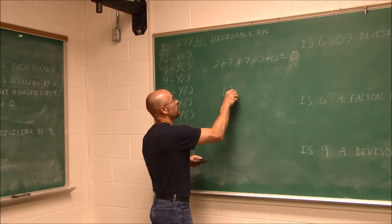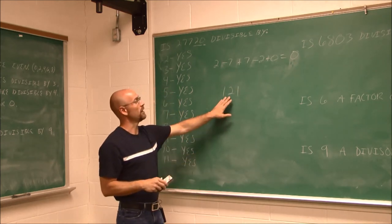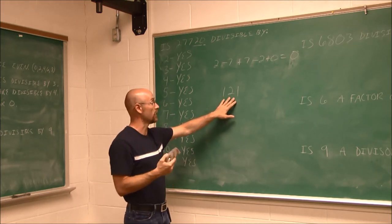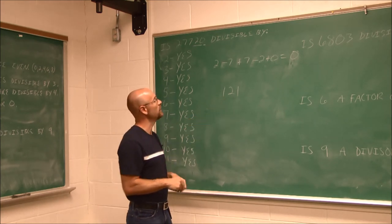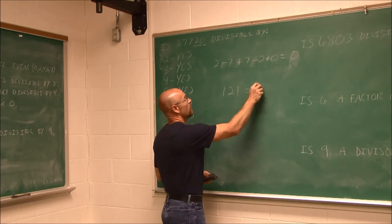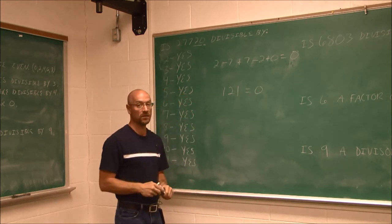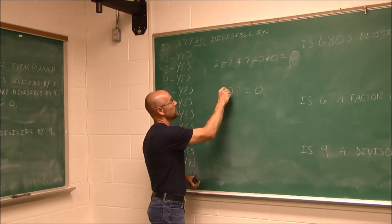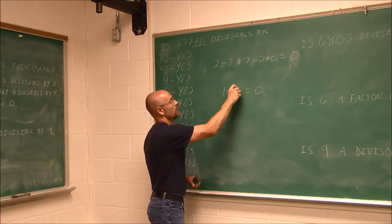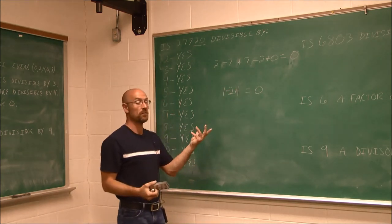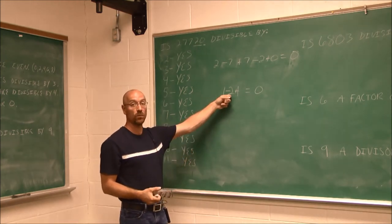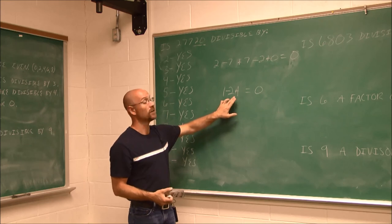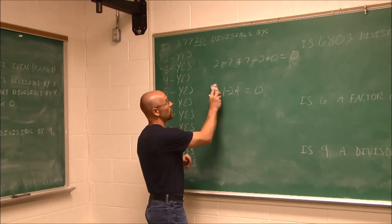As a quick example, take 121 — which is 11 times 11. Applying the rule: first digit positive, second negative, last positive. 1 minus 2 is negative 1; negative 1 plus 1 is 0. The result is 0, so 121 is divisible by 11. That's our rule.